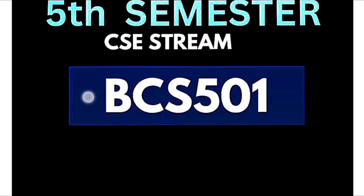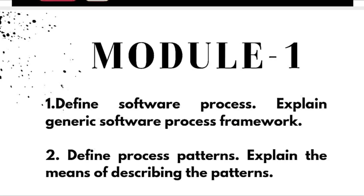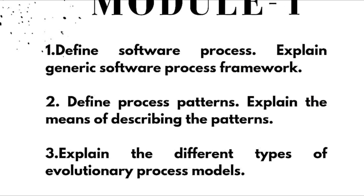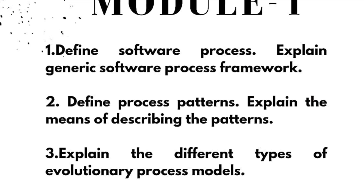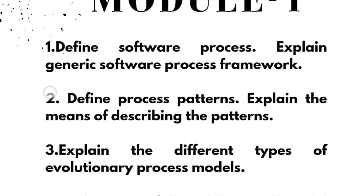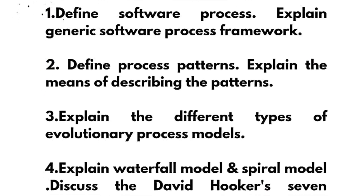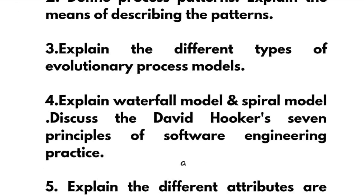Subject code is BCS501. From Module 1, the super important questions are: define software process; explain generic software process — this may be a 10-mark question in the exam. For theoretical subjects, try to fill more pages and write in your own words. Next: define process patterns and explain the means of describing the patterns. Explain the different types of evolutionary process models — again, this may be a 10-mark question.